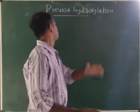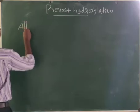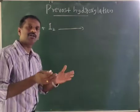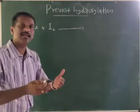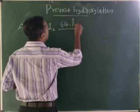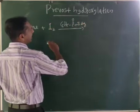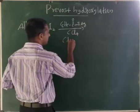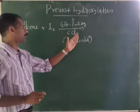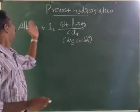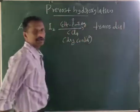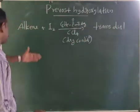In Prevost hydroxylation, the reagent is silver benzoate (C6H5-C(=O)-O⁻ Ag⁺) in the presence of CCl4 under dry conditions — no water present. This dry condition is very important, and it is why we get a trans diol as the product.